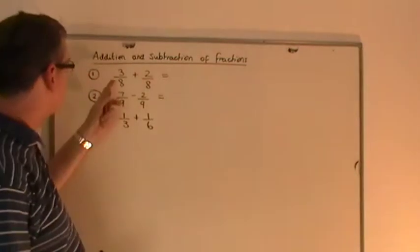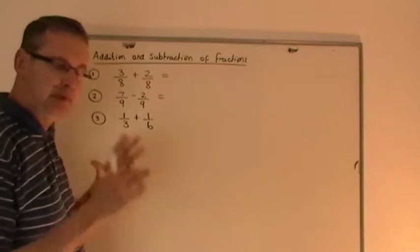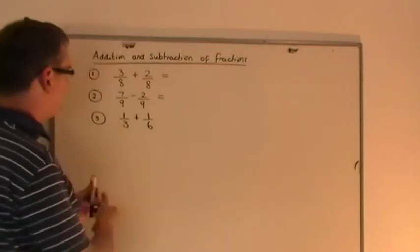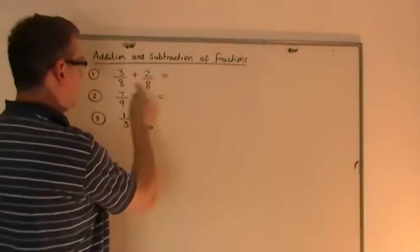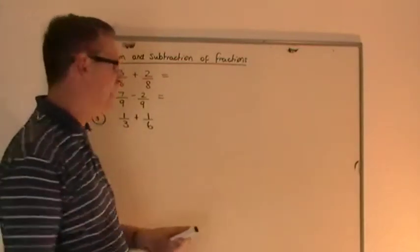Let's have a look at number 1. If you have 3 eighths and you add to it 2 eighths, the answer is really simple. But please don't fall into the trap of saying 3 plus 2 is 5, 8 plus 8 is 16. The answer is not 5 sixteenths.